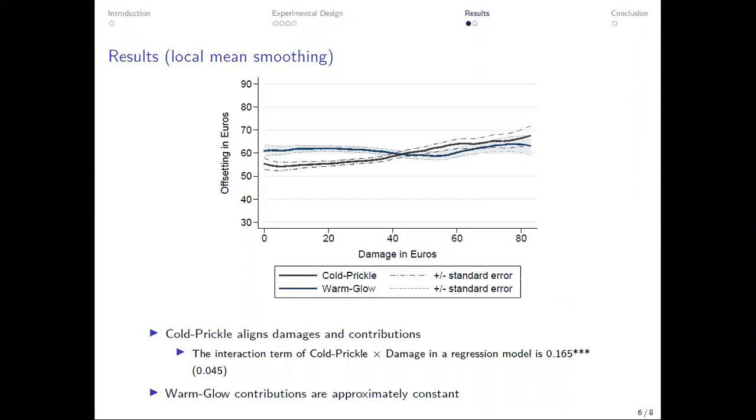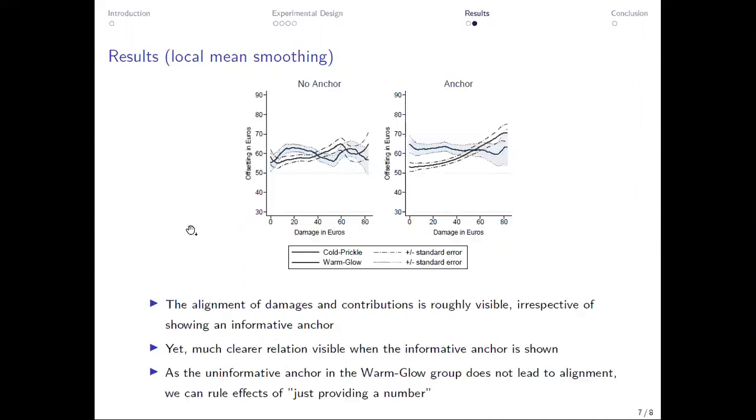This is also confirmed by parametric regression analysis. And if we now distinguish between those who saw an anchor and those who did not, we still see this upward sloping curve under the cold prickle frame and the flat curve under the warm glow frame. So the alignment effect is present in both groups, but it's much more pronounced under the anchoring groups, so where the actual damage amount was told.